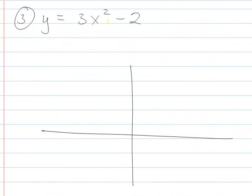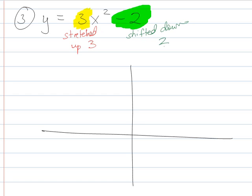So here, there's nothing going on inside the square term. So I just have to pay attention. What is going on? This is going to be stretched up three. The negative two at the end means it's going to be shifted down two. So normally my vertex is here. It's shifted down two. So that's my new vertex.